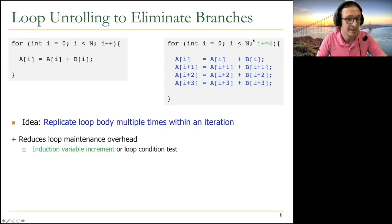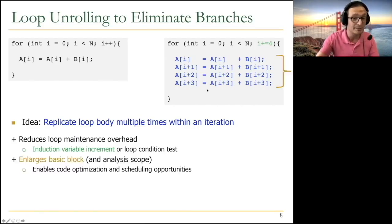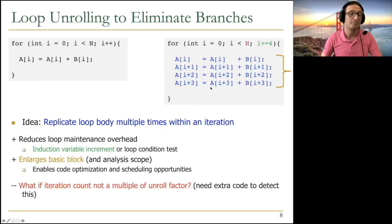If you do this, you don't execute as many branches, you don't execute as many loop control instructions. You reduce the loop maintenance overhead. Induction variable increment or loop condition test reduces by one-fourth, by three-fourths in this case. You enlarge the basic block. Now we have a bigger basic block over here as opposed to a single set of instructions. This enables code optimization and scheduling opportunities.